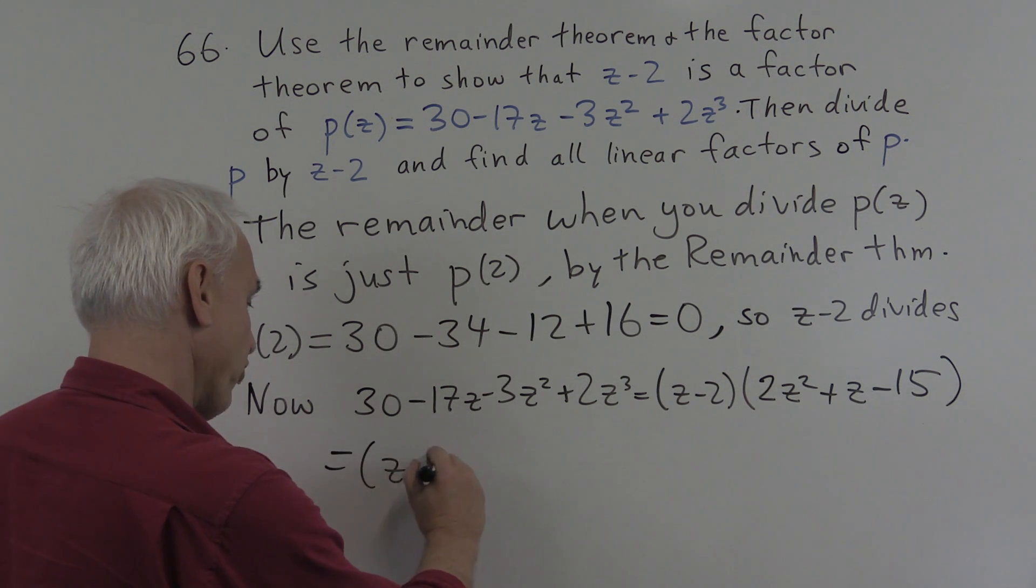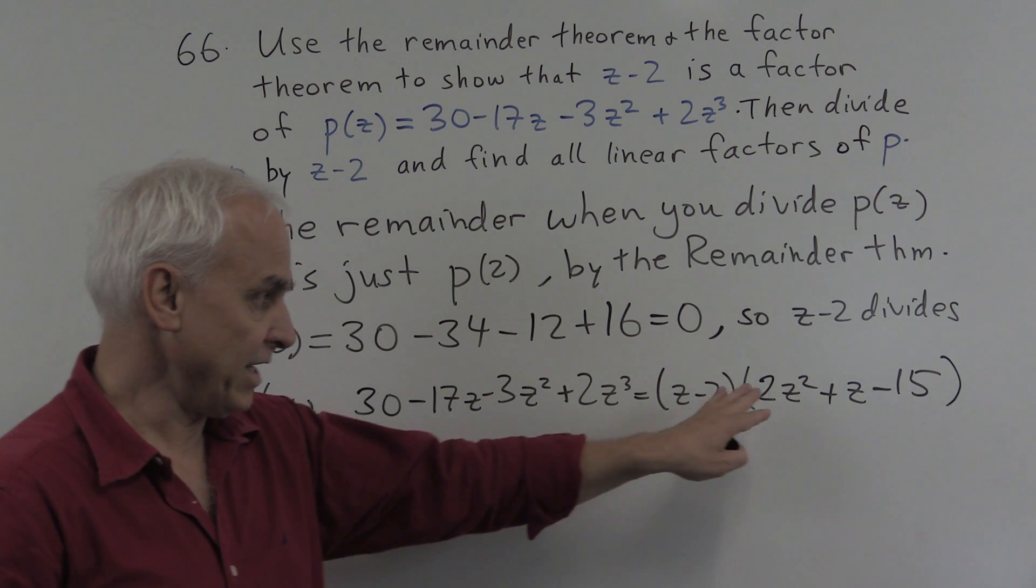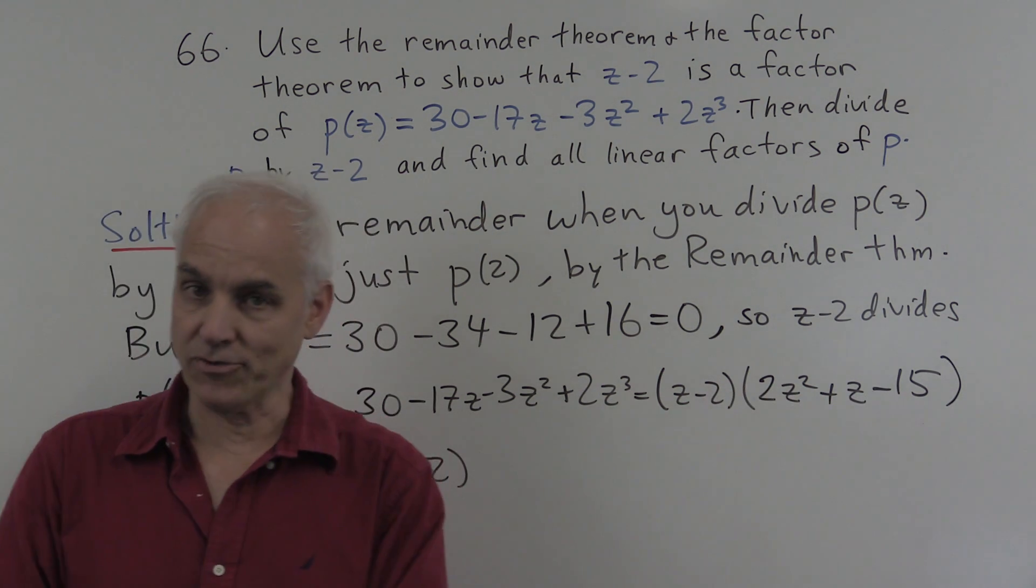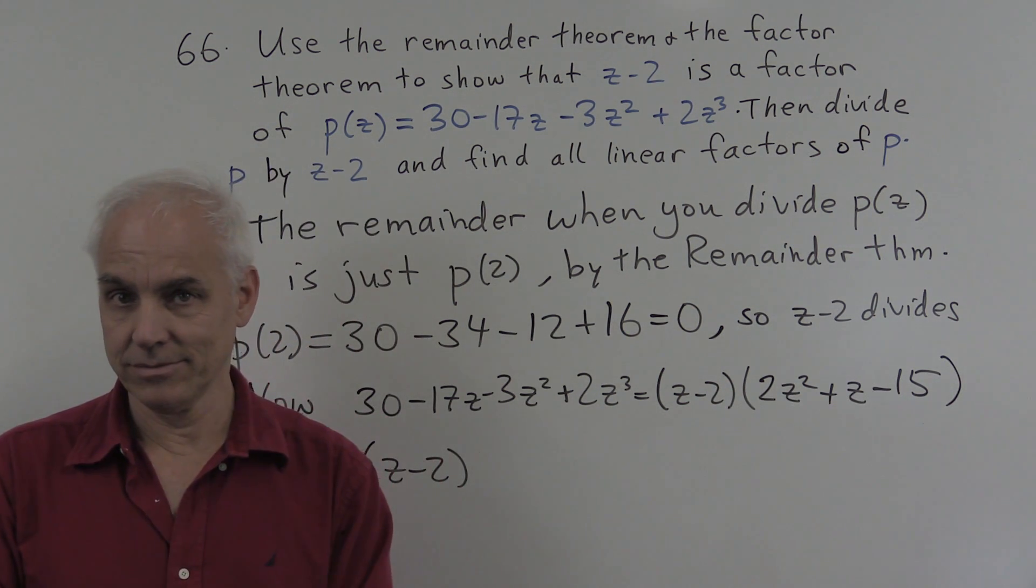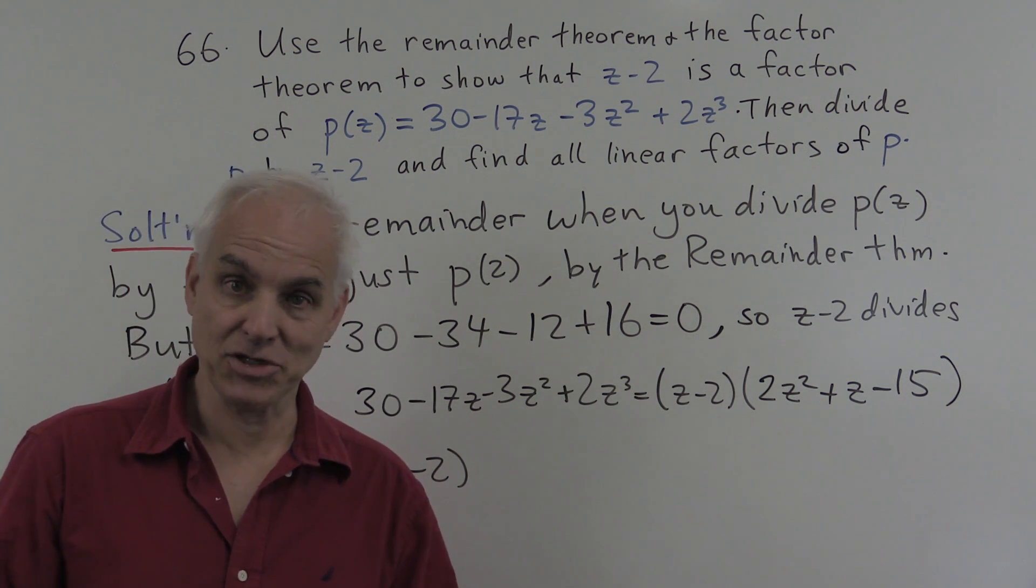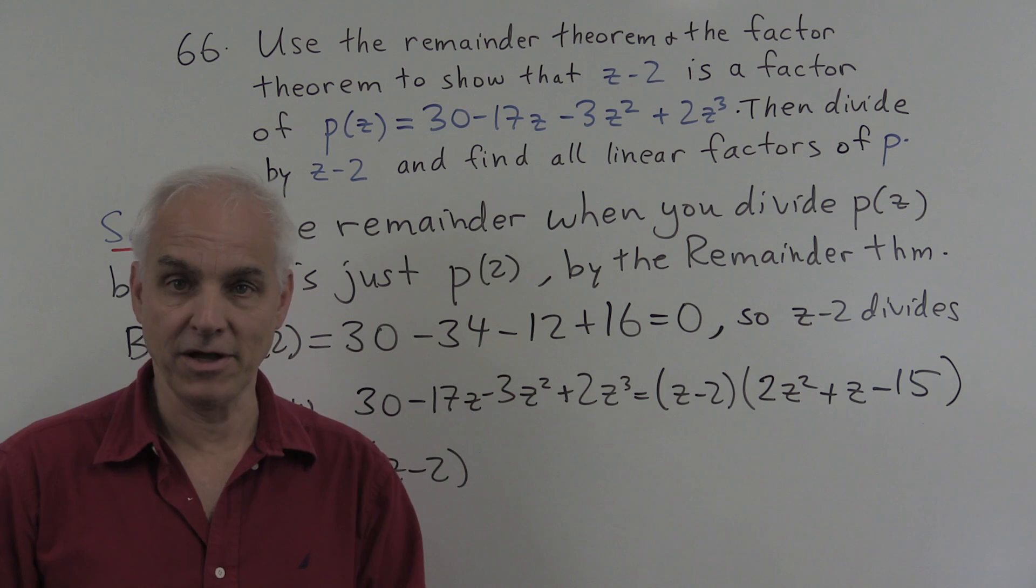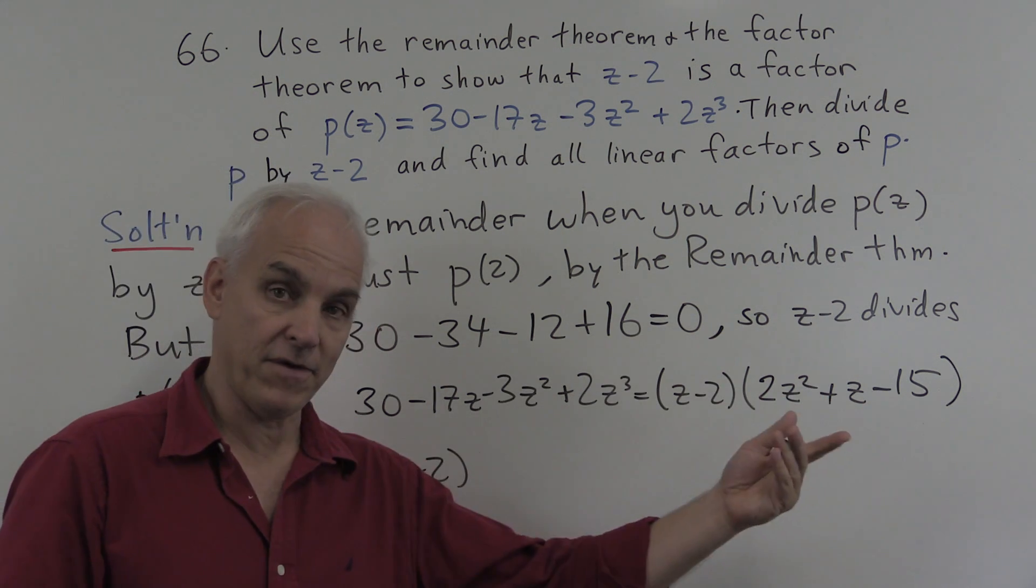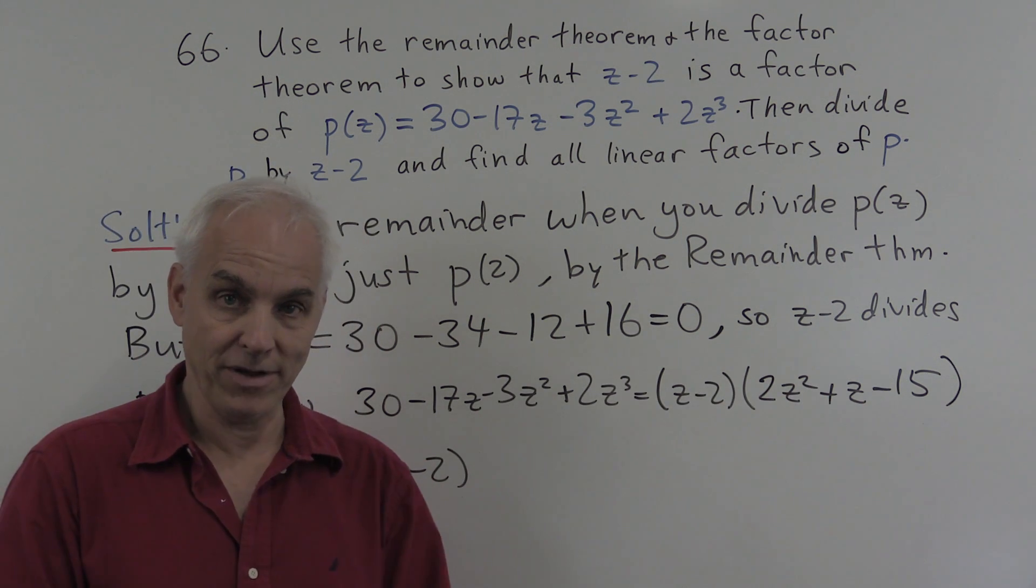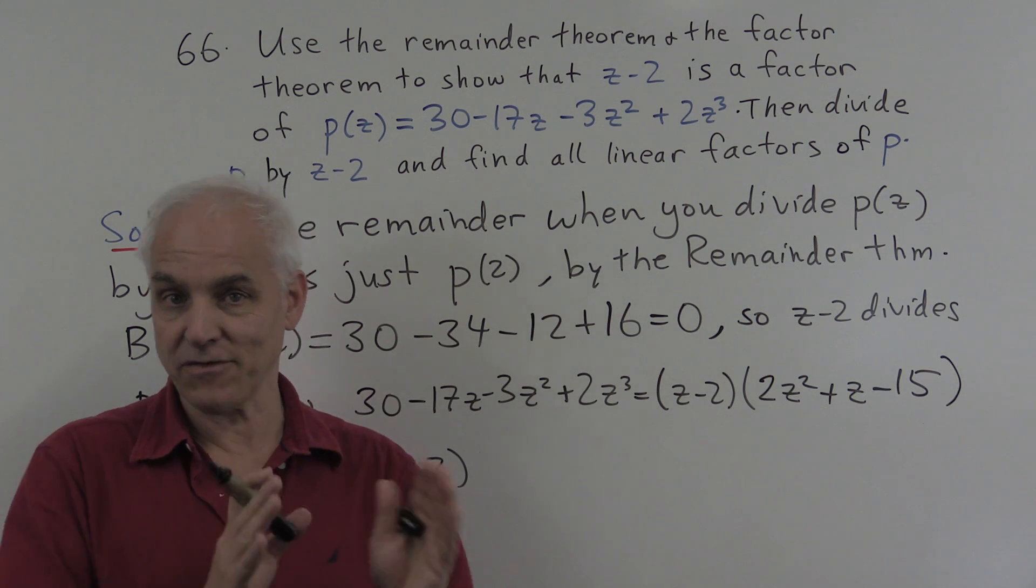All right, now finally, to write it as a product of linear factors, we need to factor this quadratic polynomial. And a surefire way of doing that is to use the quadratic formula to find the zeros of that quadratic polynomial, and then write a linear factor for each one of those.